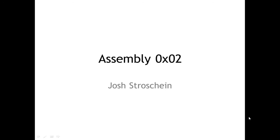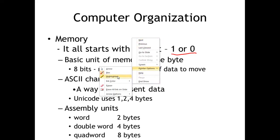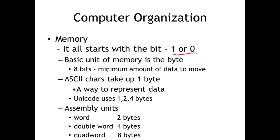To get started, we'll take a look at computer organization because it all starts with memory — it all starts with the bit. The bit, as we can generally define it, is a one or a zero. So that's the basic unit of measure we have: that one or zero. It's binary. Everything is binary.